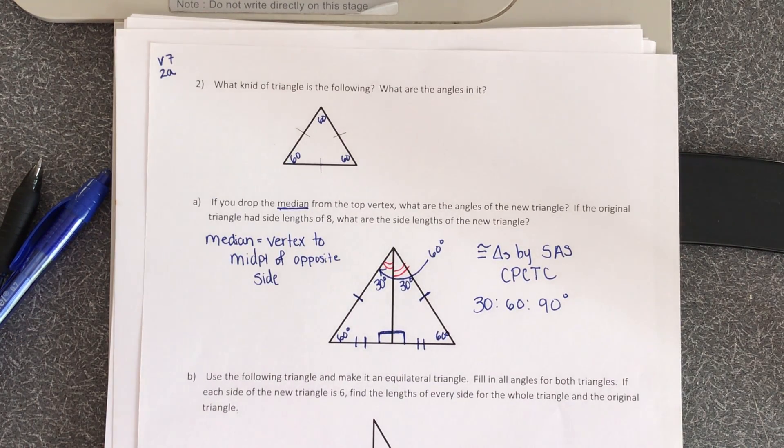Now, one thing we didn't do is we didn't answer the question. We talked about why this is a 30-60-90 triangle and how we got that, but now let's talk about the side lengths.